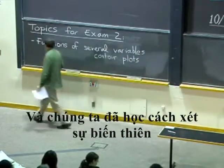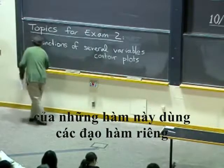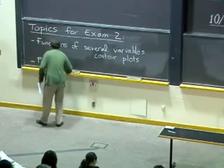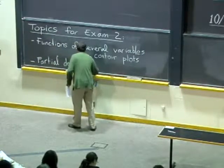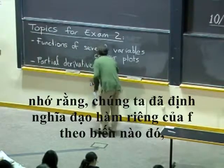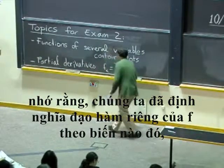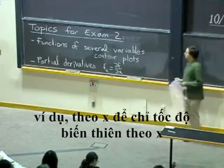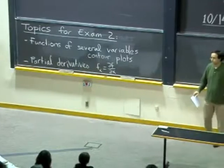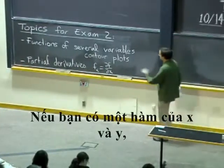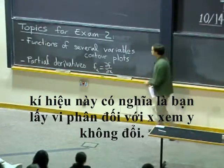We've learned how to study variations of these functions using partial derivatives. We've defined the partial of f with respect to some variable, say x, to be the rate of change with respect to x when we hold all the other variables constant. So if you have a function of x and y, this symbol means you differentiate with respect to x, treating y as a constant.